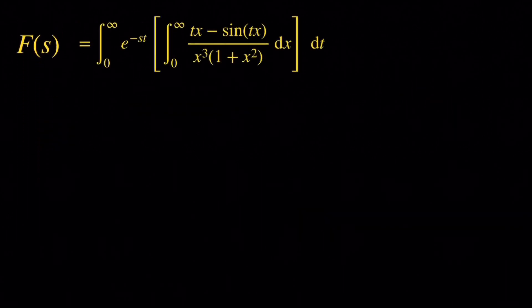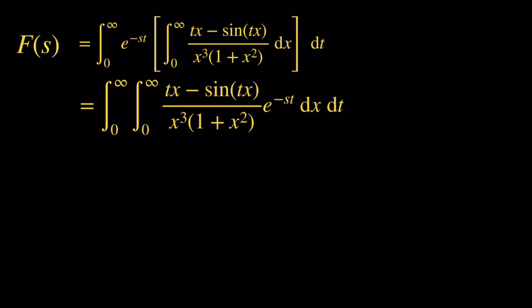So let's compute F of s. It's equal to the integral from 0 to infinity of e to the negative st times the integral from 0 to infinity of tx minus sine of tx over x cubed times 1 plus x squared dx, then dt. Notice that e to the negative st does not depend on x, so with respect to x it is just a constant. Therefore we can bring it inside and remove those brackets, and we now have a double integral.